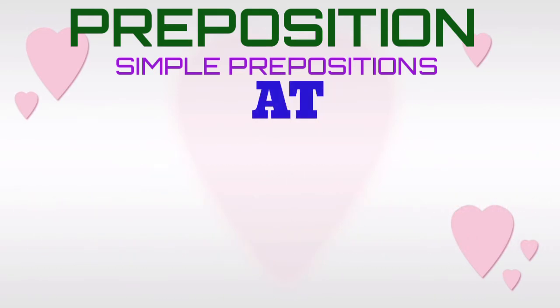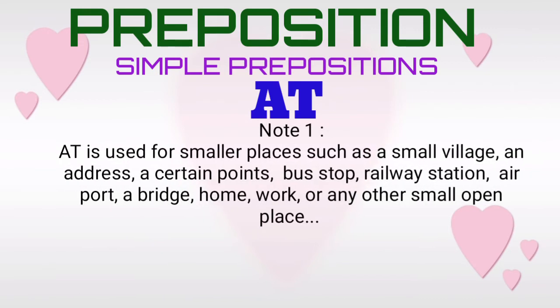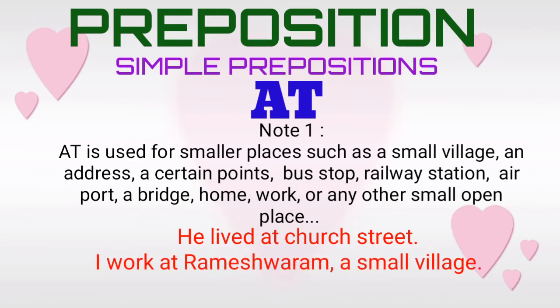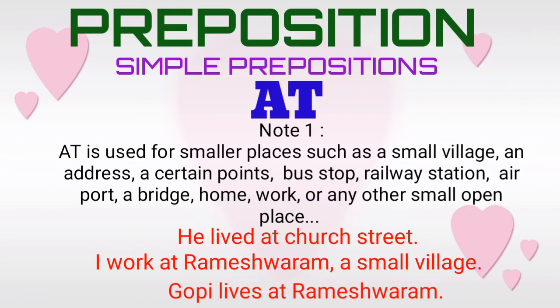Simple preposition 'at', note one. The simple preposition 'at' is used for smaller places such as a small village, an address, a certain point, a bus stop, a railway station, an airport, a bridge, home, work, or any other small open place. For example: 'He lived at Church Street.' 'I work at Rameshwaram, a small village.' 'Gopi lives at Rameshwaram.' Here the simple preposition 'at' is used for smaller places.